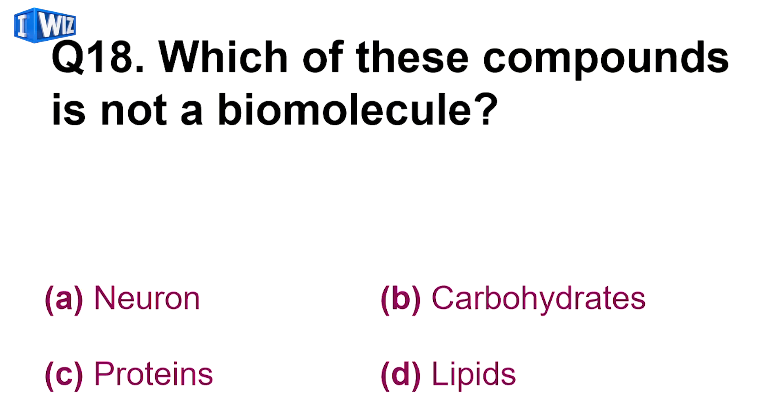Next is, which of these compounds is not a biomolecule? Neuron, carbohydrate, proteins, ya lipids. So neuron jo hai, wo eek biomolecule nahi hai, wo body ka sabse bada cell hai, lekin wo biomolecule nahi hai, wo nerve cell hoota hai. So A is the correct answer.